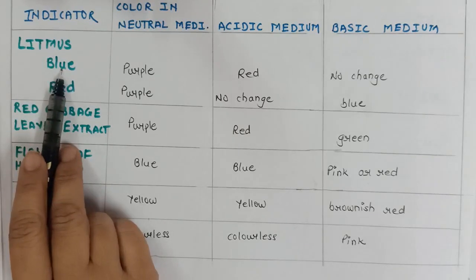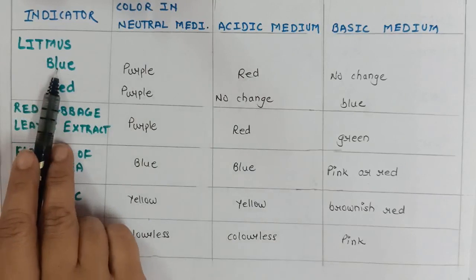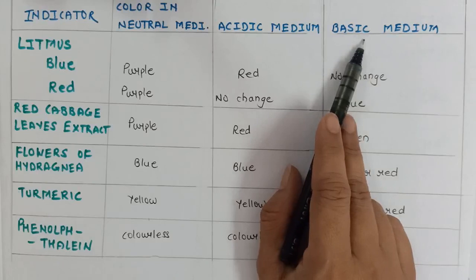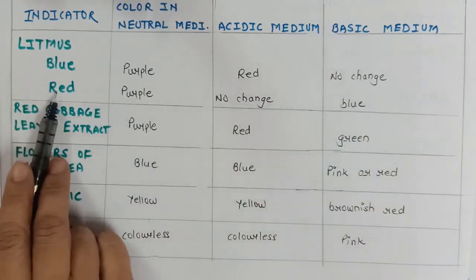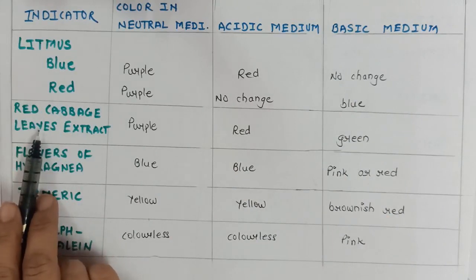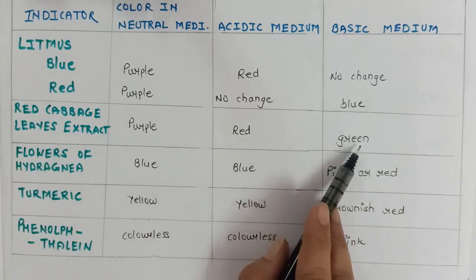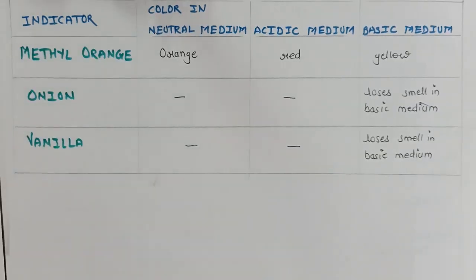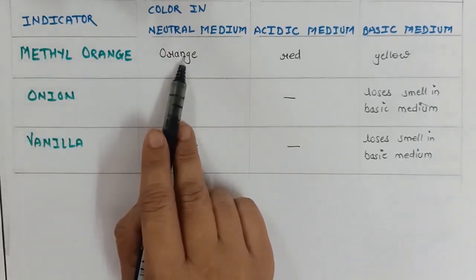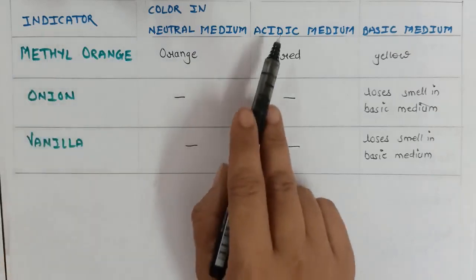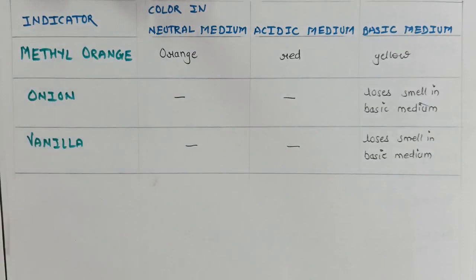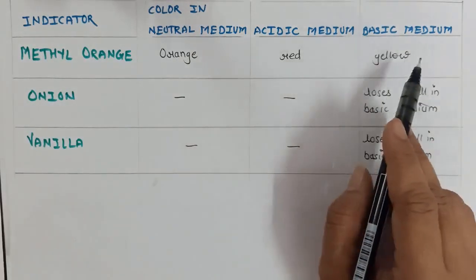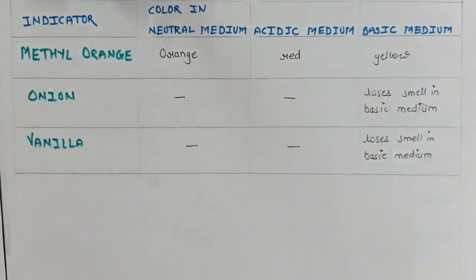Blue litmus changes color in contact with acid and is therefore called an acidic indicator. Red litmus, red cabbage, flowers of the hydrangea plant, turmeric, and phenolphthalein all change color in basic medium and are therefore called basic indicators. Moving on to the next synthetic indicator — methyl orange. Its color in neutral medium is orange. If methyl orange is brought into contact with acidic medium, its color changes to red. In basic medium, its color changes to yellow. Phenolphthalein and methyl orange are the two most commonly used synthetic indicators in the chemistry lab.